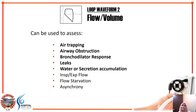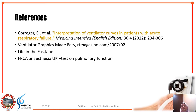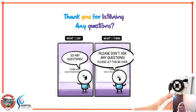In summary, from the flow-volume loop you can assess air trapping, airway obstruction, bronchodilator response, leaking, and water or secretion accumulation. We've now discussed all five waveforms. I hope you've learned something from this lecture and can put it into practice. Thank you for listening — any questions can be posted in the chat box.